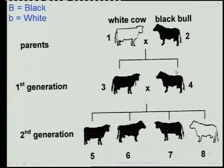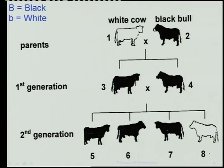Can we know for sure about the others? The only one we can be sure about, apart from these, will be the black bull, because all the offspring contain a white gene, but all of them also have the black gene.